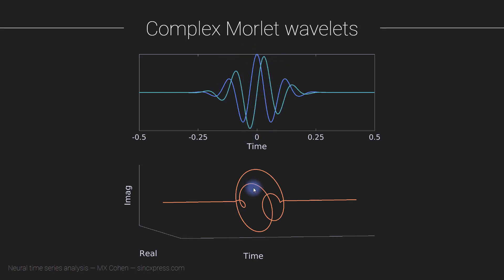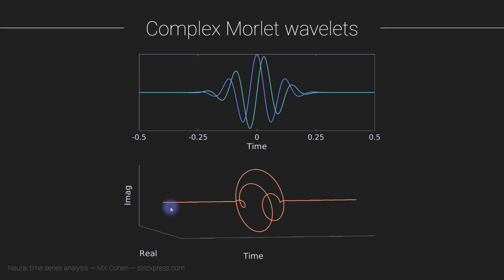This is one way of viewing a complex Morley wavelet. Another good way to represent it visually is in a three-dimensional space where you have the time axis, the real axis, and the imaginary axis — the same representation used for the complex sine wave. In the middle, the complex Morley wavelet looks a lot like a complex sine wave, but of course it tapers down to zero as you go toward negative and positive time.